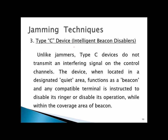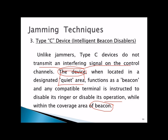Type C devices, intelligent beacon disablers, also do not transmit interference signals on the control channels. When located in a designated quiet area — where communication is not required — the device functions as a beacon, and any compatible terminal is instructed to disable its ringer or disable its operation while within the coverage area of the beacon.